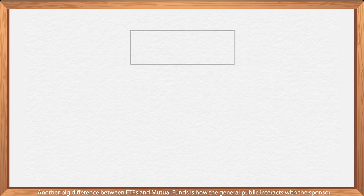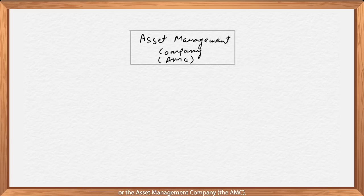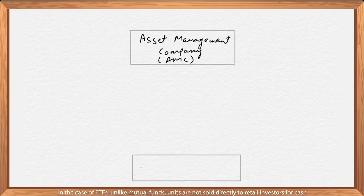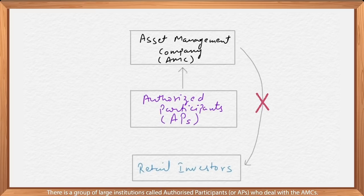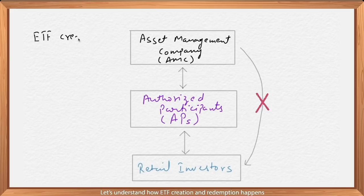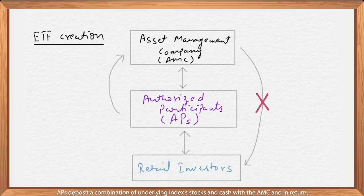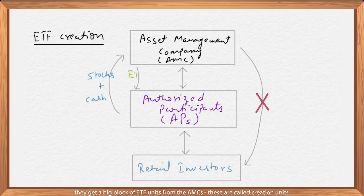Another big difference between ETFs and mutual funds is how the general public interacts with the sponsor or the Asset Management Company, the AMC. In the case of ETFs, unlike mutual funds, units are not sold directly to retail investors for cash. There is a group of large institutions called Authorized Participants, or APs, who deal with the AMCs — they sit between the AMC and the retail user. To create new ETF units, APs deposit a combination of underlying index stocks and cash with the AMC, and in return they get a big block of ETF units from the AMC. These are called creation units.